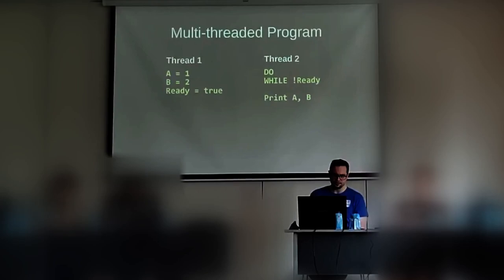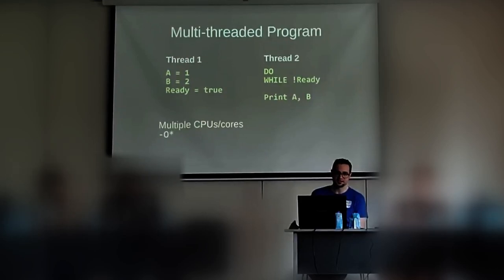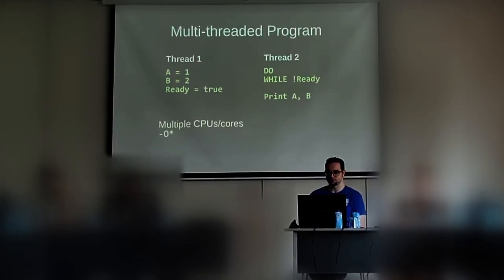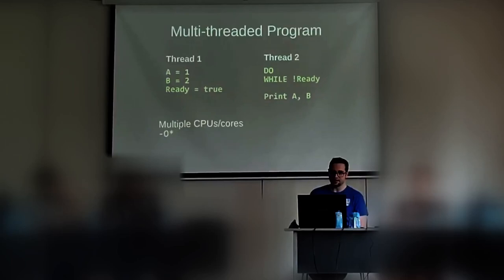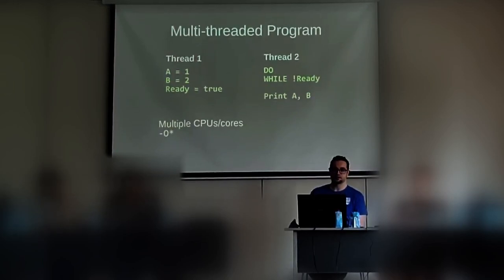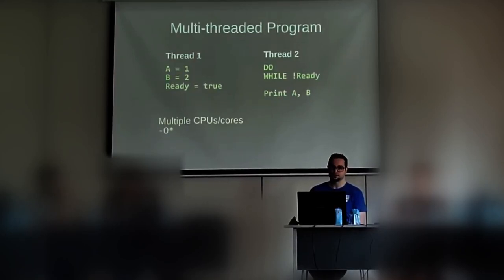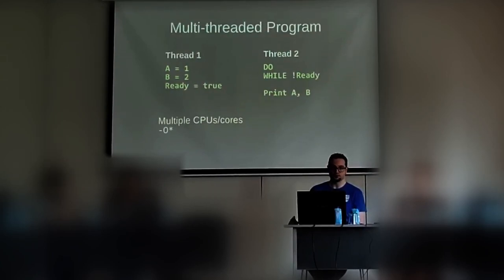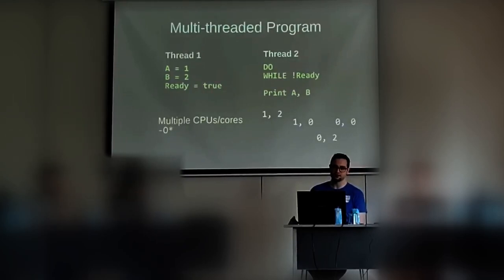Multi-threaded program, but running this time on multiple CPUs, multiple cores. Multiple threads can be really running at the same time. Regardless of the level of optimization — if compiling without optimizations, the compiler won't be reordering instructions, but the CPU will still do so; if compiling with optimizations, both will. So regardless, if we are not applying any countermeasure, we can again get any of the four outcomes.